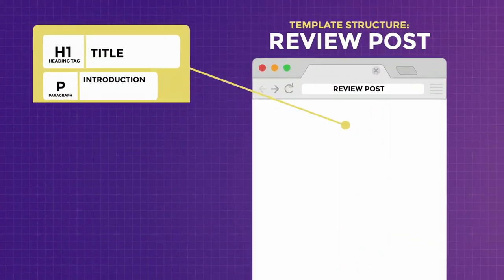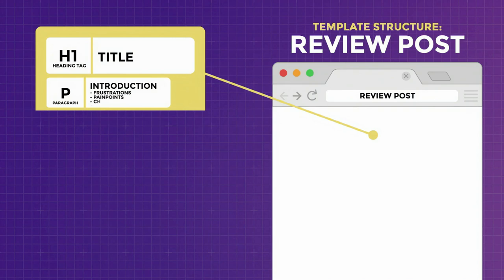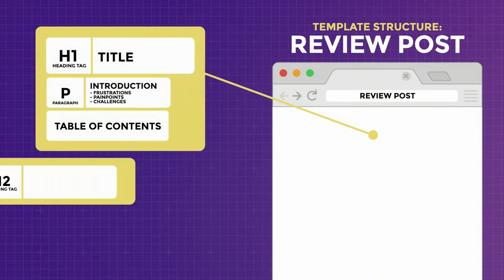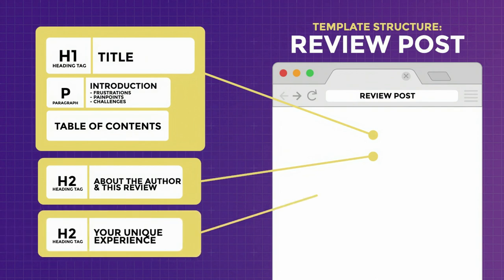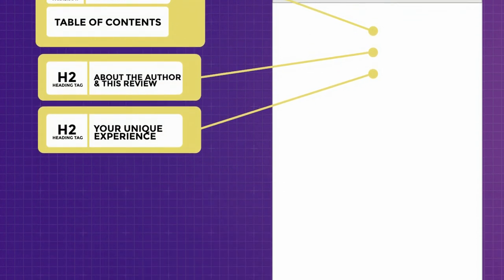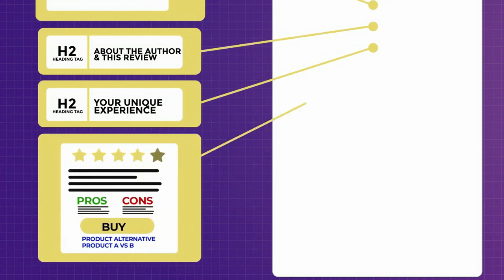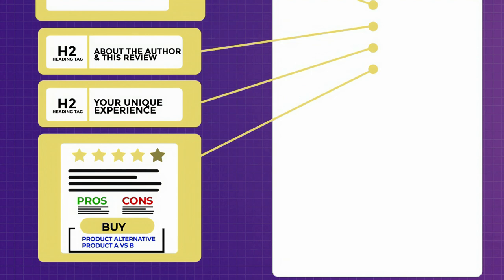The best structure for a review post starts with an introduction that includes the frustrations, pain points, and challenges people face before discovering the product. Add a table of contents. Then write a little bit about yourself and why people should trust your judgment — try to include evidence that you own the product in this section. Follow up with the most important thing in the review: your unique experience and opinion on the product. If you have experience with other similar products, share your opinion on this product versus those, and let people know why they should or should not use it. Thereafter, give an overview of the review — a summary and a snippet of the pros and cons. Most of the time, people want to know their options before making a purchase, so include internal links to alternatives or comparison articles.